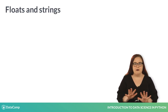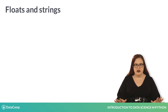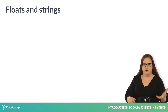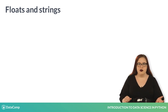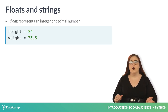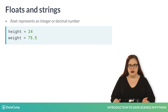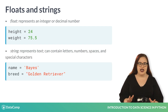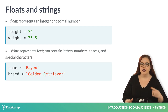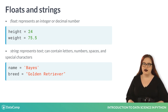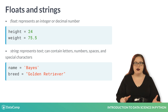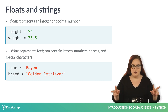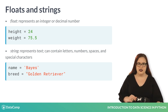Variables come in many flavors. Two important flavors are floats and strings. Floats represent either integers or decimals. Strings represent text and can contain letters, numbers, spaces, and special characters. We define a string by putting either single or double quotes around a piece of text.